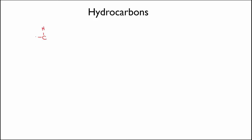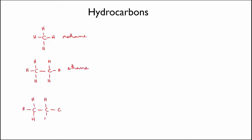You start with one carbon, satisfying its four bonds with hydrogen atoms, and that gives you methane. Then you could take two carbon atoms — to fill in the hydrogens you need six of those. This is called ethane. Add another carbon, and you have C3H8, which is propane. You can see that we can build up a whole series just by adding more and more carbon atoms to the chain. So let's look at this series in more detail.